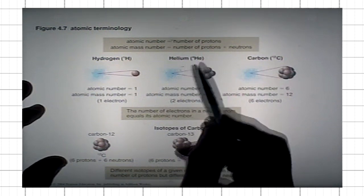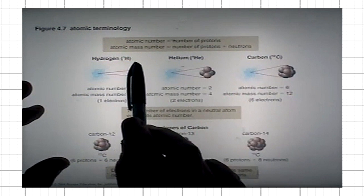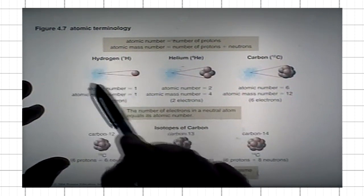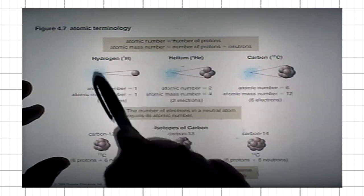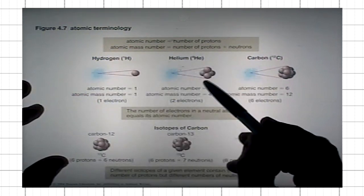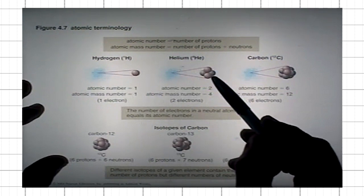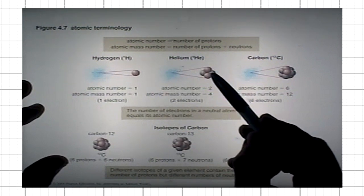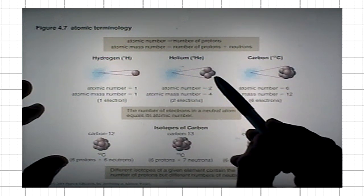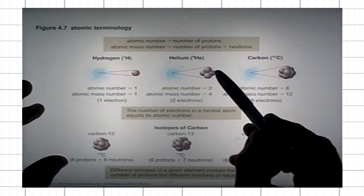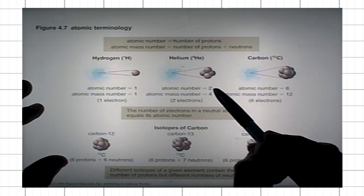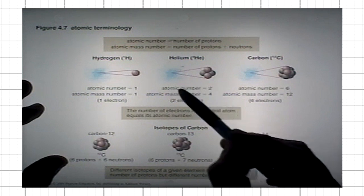The next one is helium. Remember, three quarters of the mass of any star — roughly three quarters — is made up of hydrogen, and about one quarter is made up of helium. Helium has four particles in its nucleus. It has two protons, and therefore its atomic number is two.